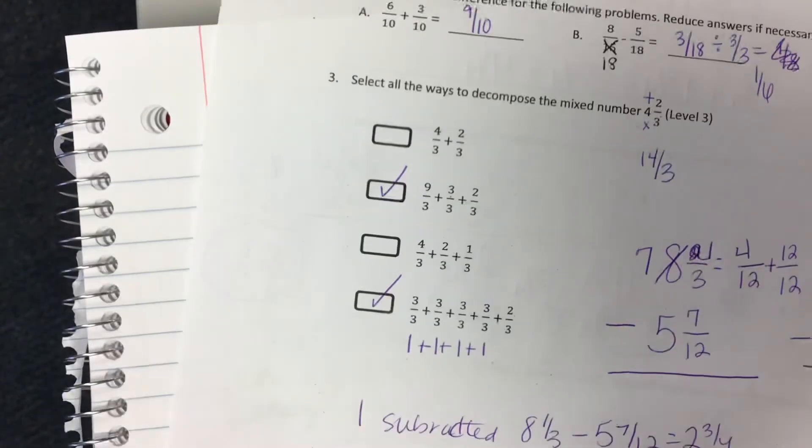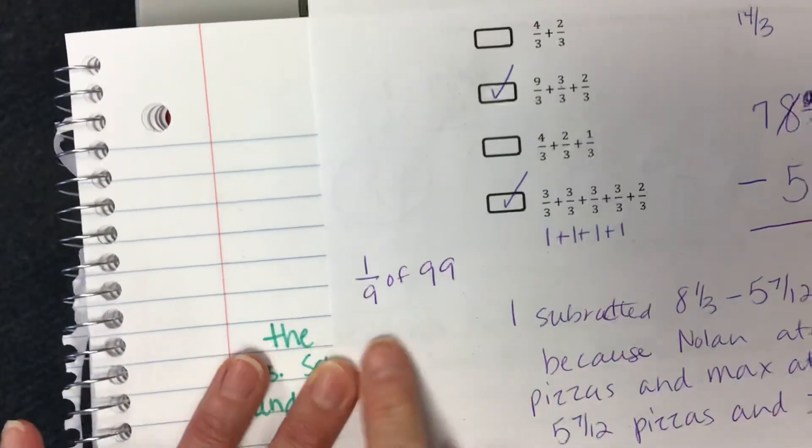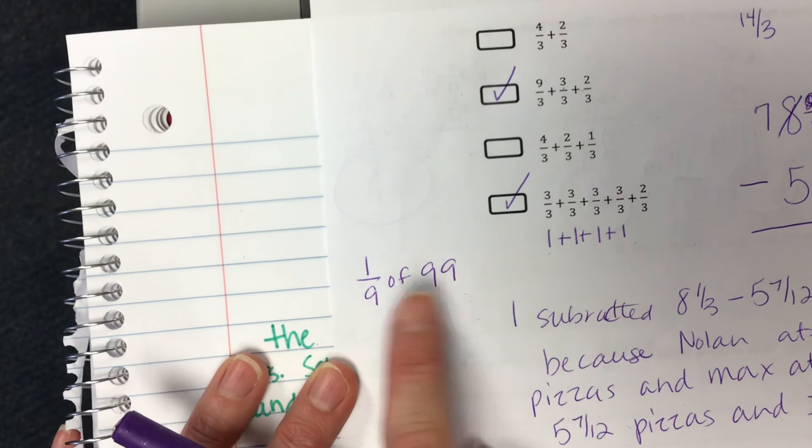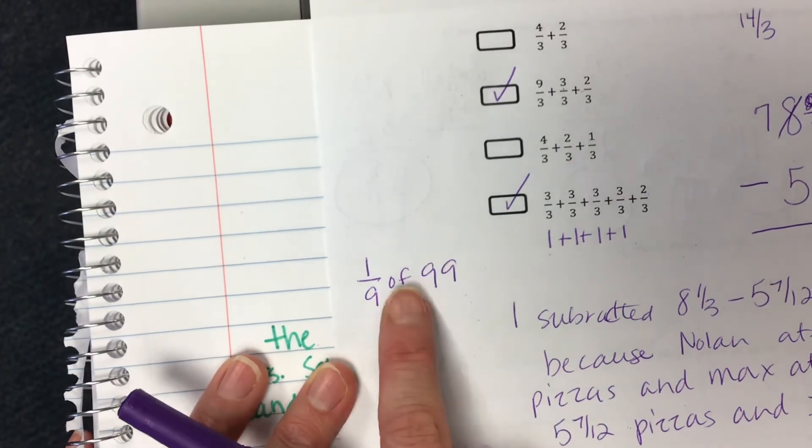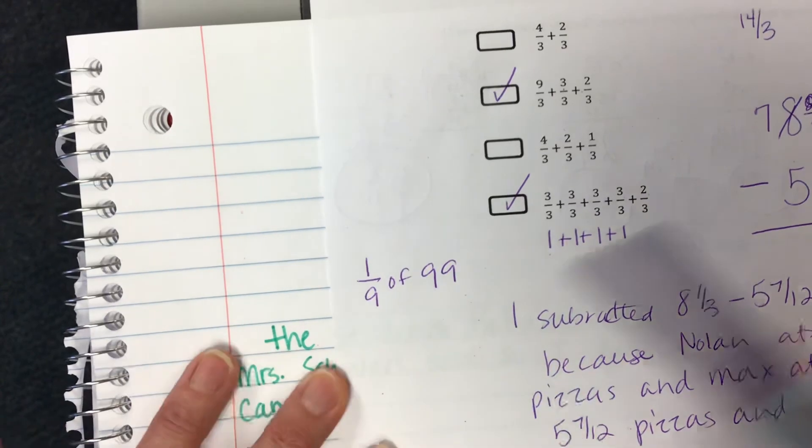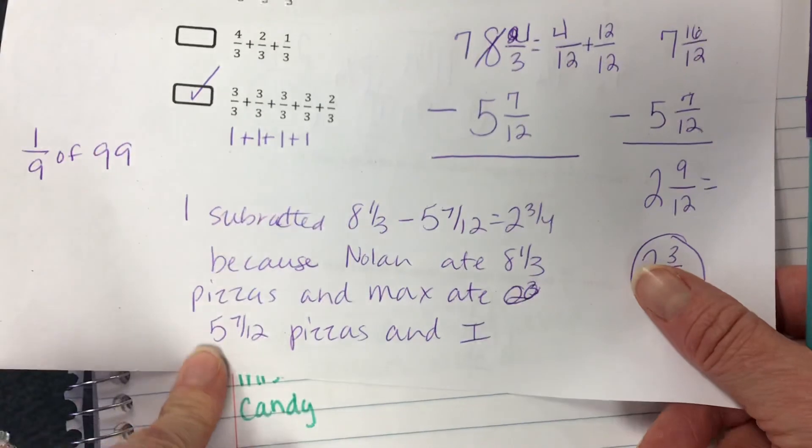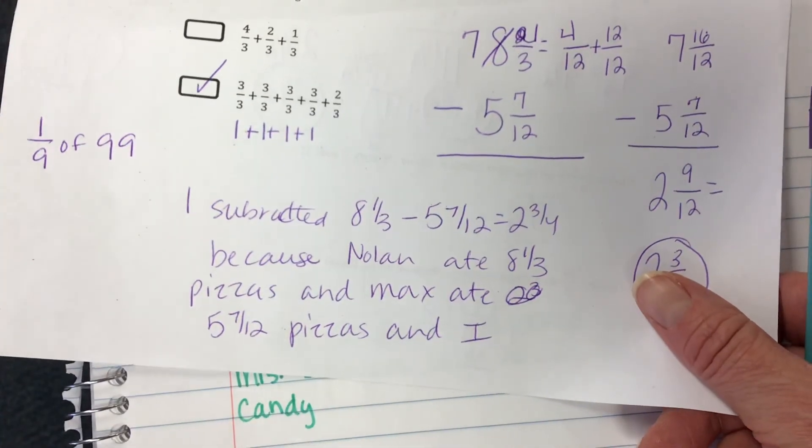On the spiral it was different because you had to find one-ninth of ninety-nine. So you did have to tell me why you did ninety-nine divided by nine or one-ninth times ninety-nine. Okay but on this you're either adding or subtracting. So you just have to tell me why you added and subtracted those numbers.